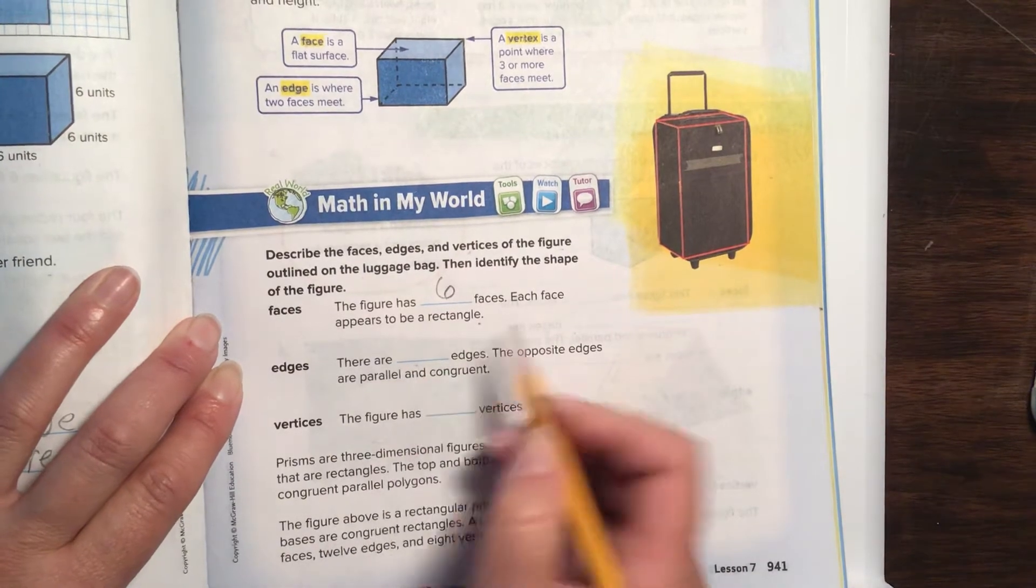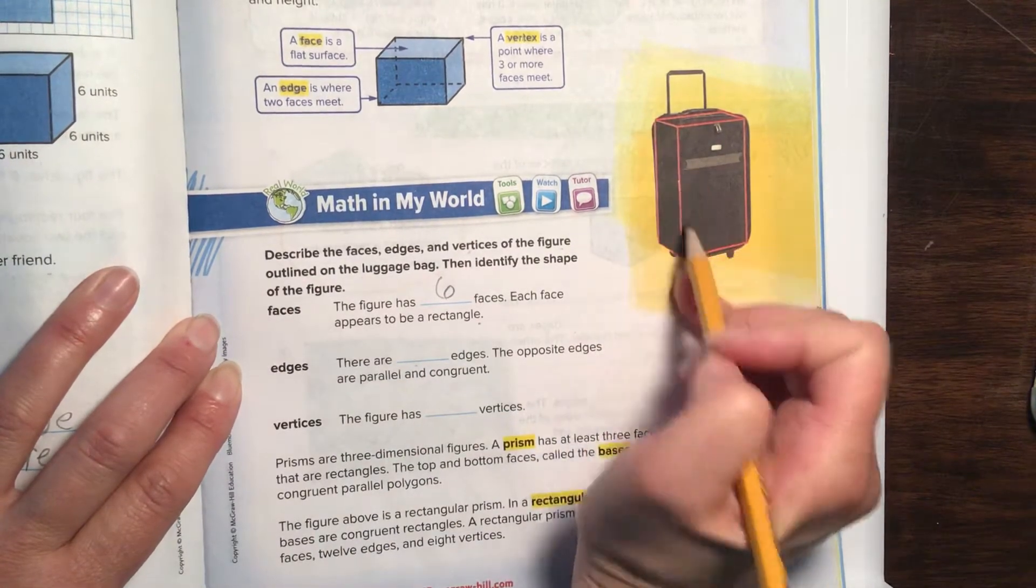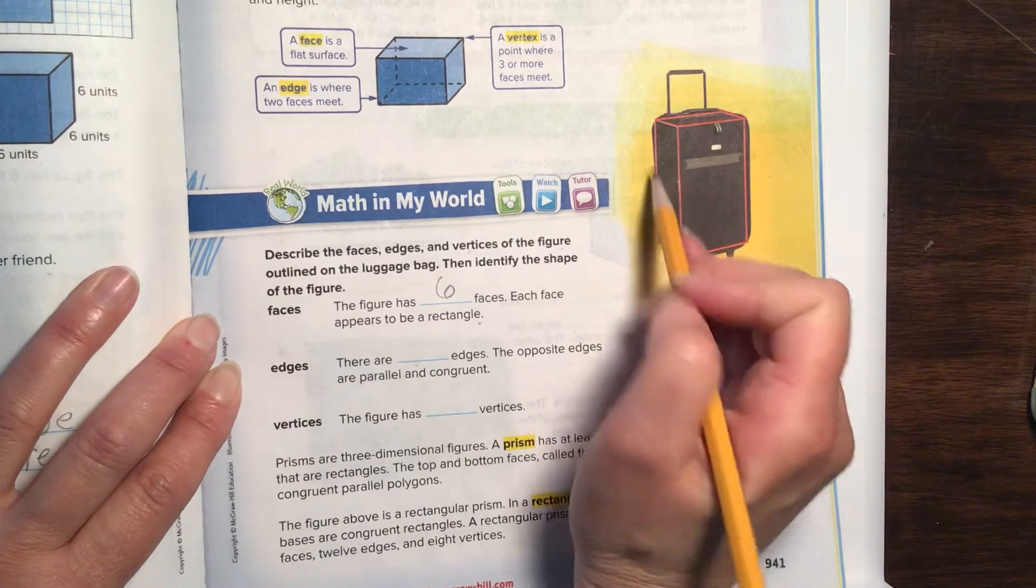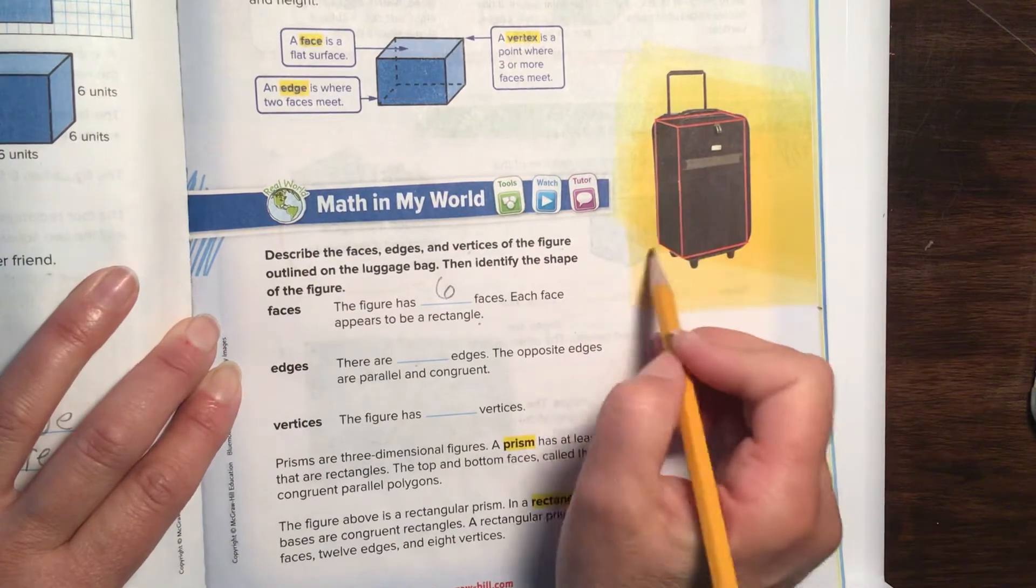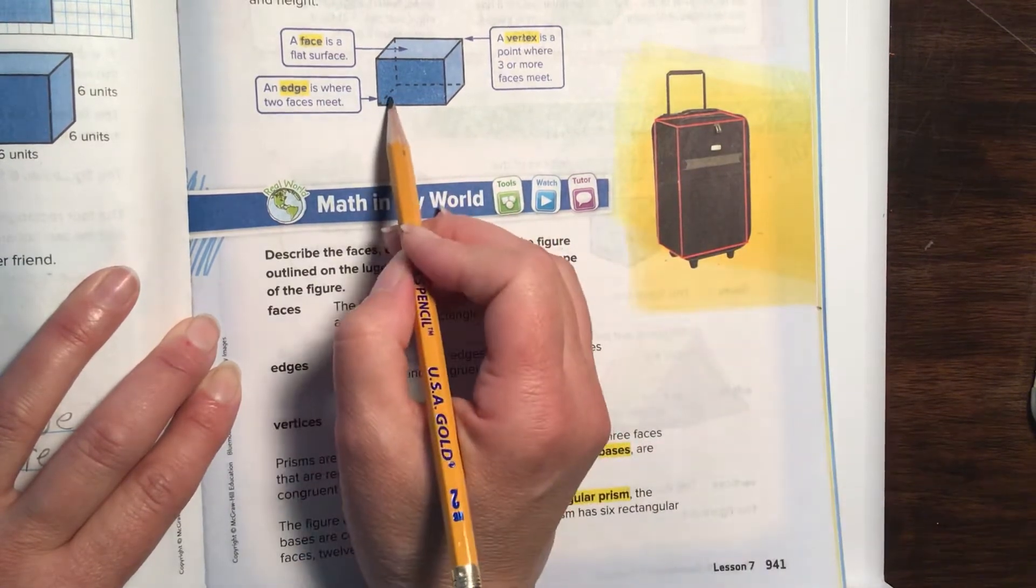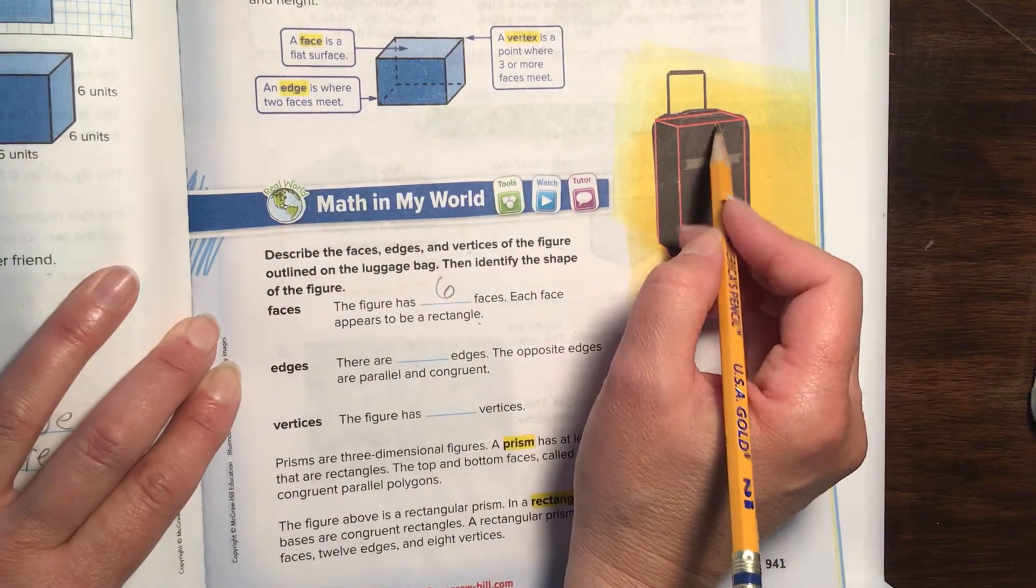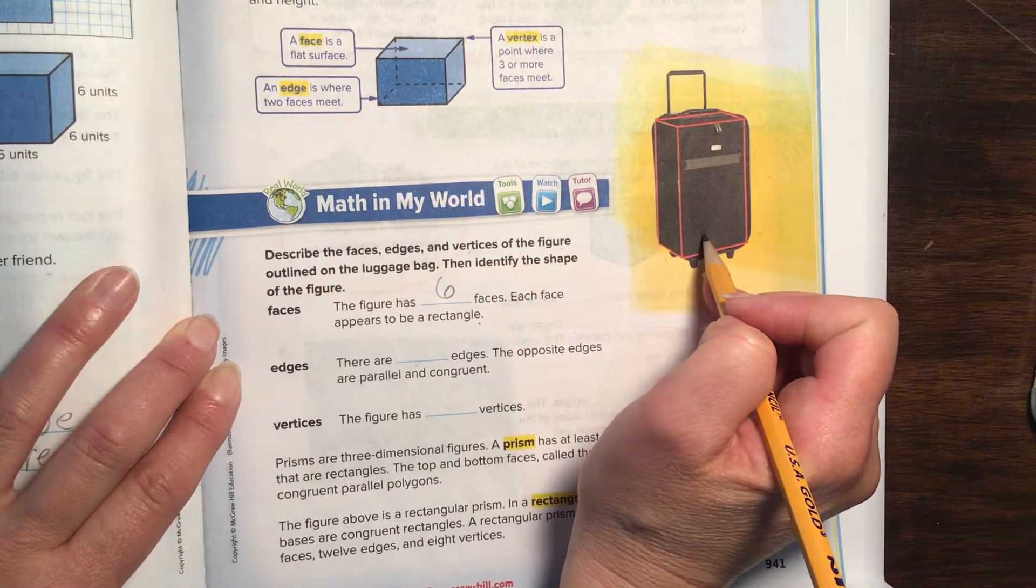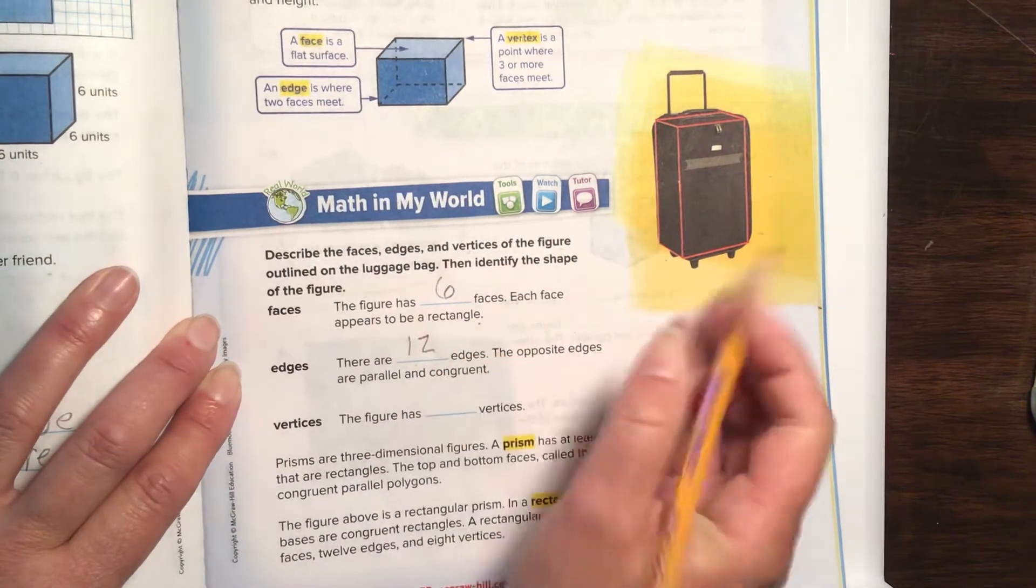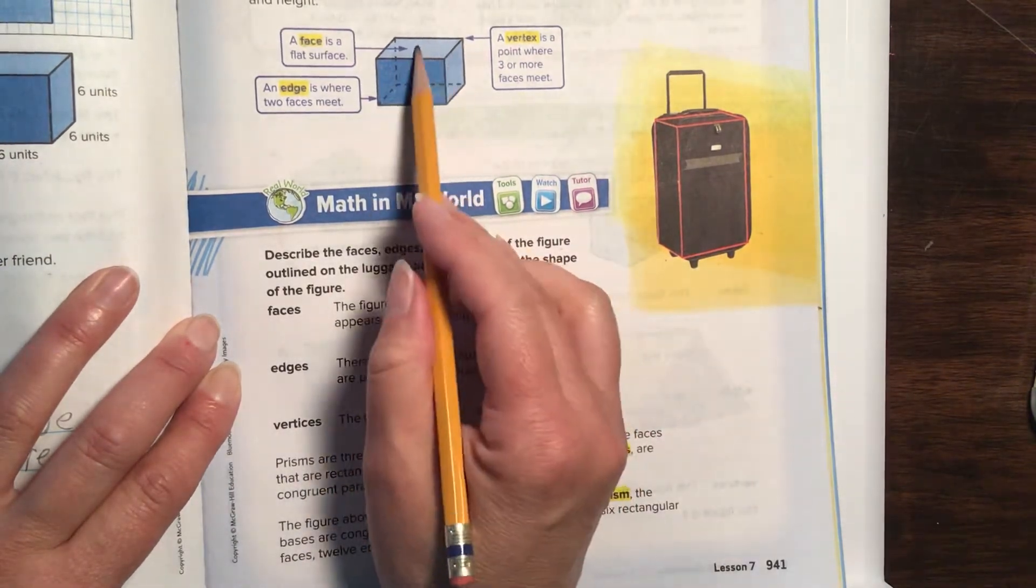Each face appears to be a rectangle. There are how many edges? Well, let's count. One, two, three, four, five, six, seven, eight, nine, ten, eleven, twelve. Now you've got to imagine this as a figure. I wish they would have drawn this see-through so you could have seen all the faces and edges.